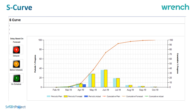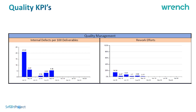You can also get quality KPIs showing the number of defects, reasons for defects, and number of reworks. This helps you improve project delivery by continuously working on defects and ensuring the same mistakes are not repeated.